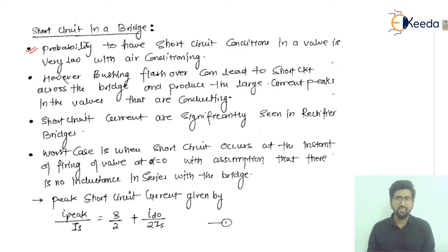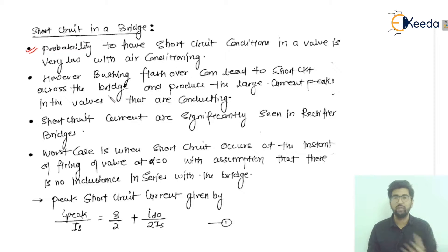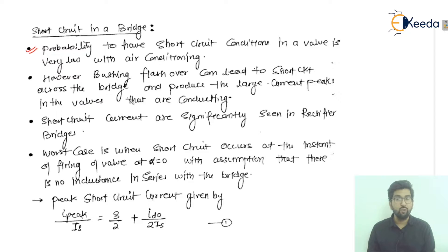However, a bushing flashover — if we talk about transformers, we have bushings, and there can be a bushing flashover — can lead to a short circuit across the bridge. In a bridge converter with a converter transformer, a large current peak is produced. The maximum value of that short circuit current is produced when the valve is already in conducting mode.